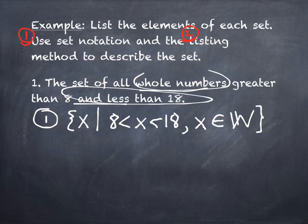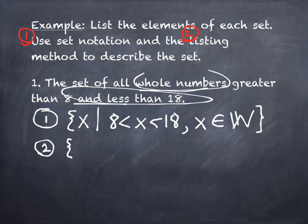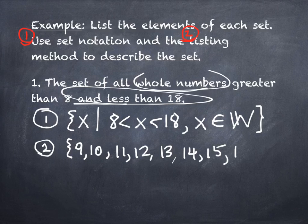So number two, what we're supposed to do is the listing method for the set. When we do the listing method, we list all the numbers inside of curly braces. The first number is 9, because it says between 8 and 18, so we start with 9. The last number is 17. So we list everything from 9 up to 17. That's the listing method for this one.